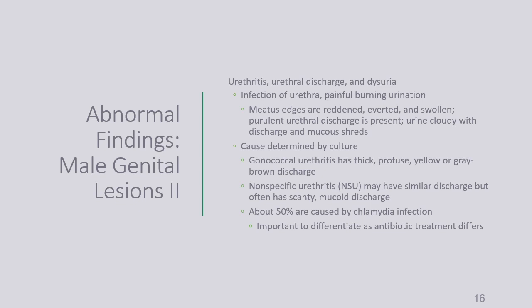Gonorrhea has thick, profuse, yellow-gray-brown discharge. If rectal, it usually presents with very inflamed, painful, itchy hemorrhoids and some bleeding. Nonspecific urethritis has less discharge and is more mucosal. About 50% of urethritis cases are caused by chlamydia. It is very important to diagnose and treat gonorrhea and chlamydia, as they can lead to testicular problems like orchitis, further infection, and loss of fertility.